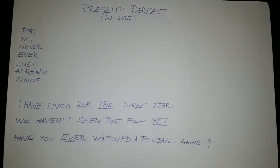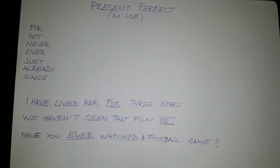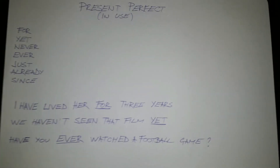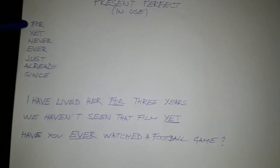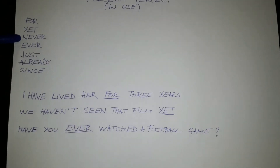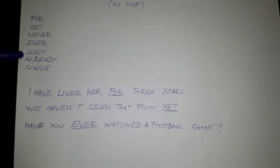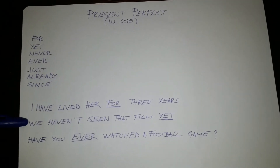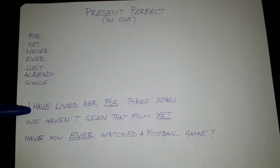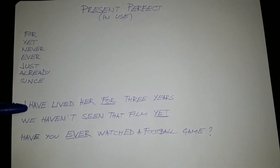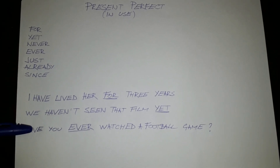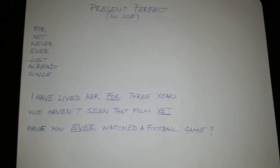We also use the present perfect when the following words are in a sentence: for, yet, never, ever, just, already, since. For example: I have lived here for 3 years. We haven't seen that film yet. Have you ever watched a football game?